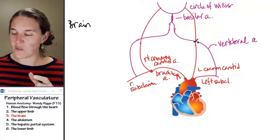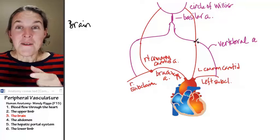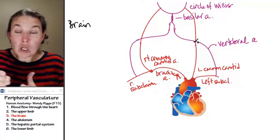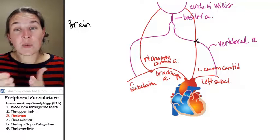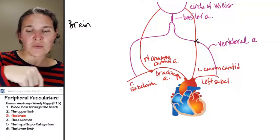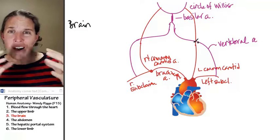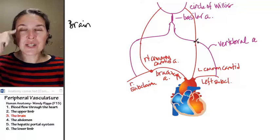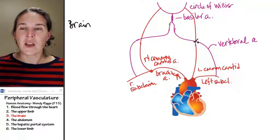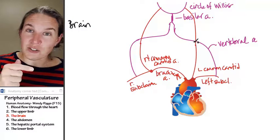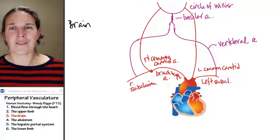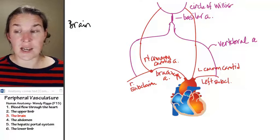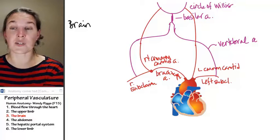You can imagine the Circle of Willis is like a roundabout. Here come multiple different sources of blood, and then it circles around, and branching off of the Circle are a whole bunch of other arteries that will ultimately feed our brain. We're going as far as Circle of Willis, knowing full well that if we wanted to name all the branches that come off of the Circle of Willis, we totally could do that.